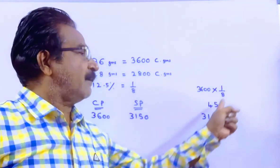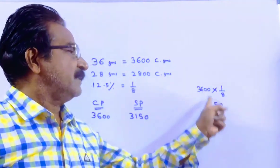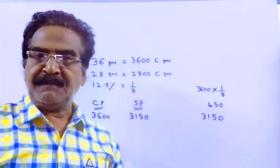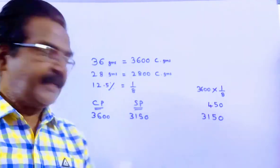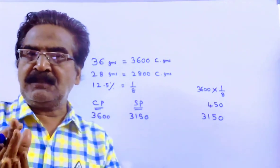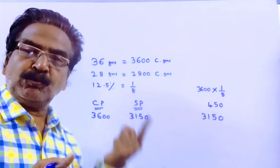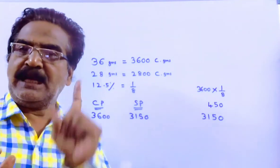3600, 12.5% loss means 450 loss. This minus this, 3150. So he has to sell 3600 rupees worth goods for rupees 3150 to have a loss of 12.5%.